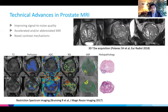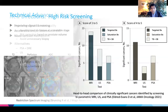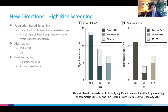Technical advances in prostate MRI include significant improvements in signal-to-noise ratio, and a number of novel contrast mechanisms have been explored that may be useful in the clinical setting as they undergo further testing. Another direction is targeting screening towards highest-risk populations and using MP-MRI to screen those patients, thereby avoiding unnecessary biopsies based on high PSA values, partly by correcting PSA based on prostate volume. Cost reduction may also be possible by using biparametric MRI and active surveillance.